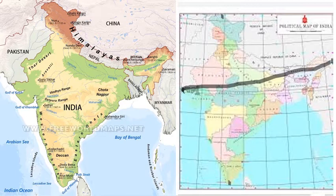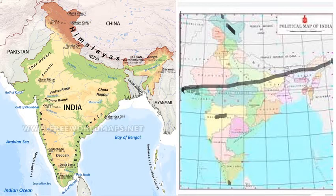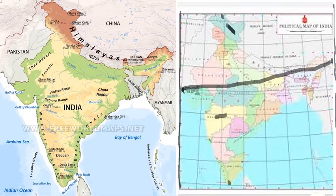Politically, India is divided into 28 states and 8 union territories. An example of a union territory in India is Ladakh, and an example of a state is Maharashtra. The longitude that passes through the western tip of India is 68 degrees east longitude, and the longitude that passes through the eastern tip of India is 97 degrees east longitude.